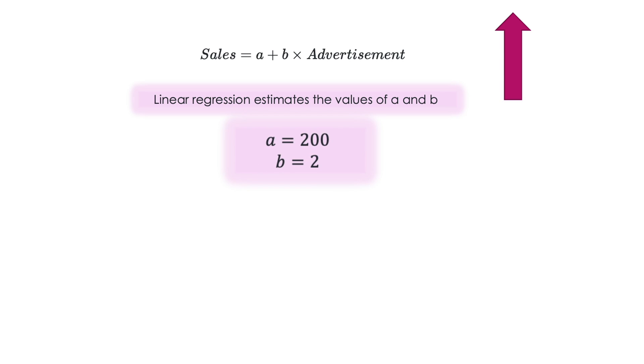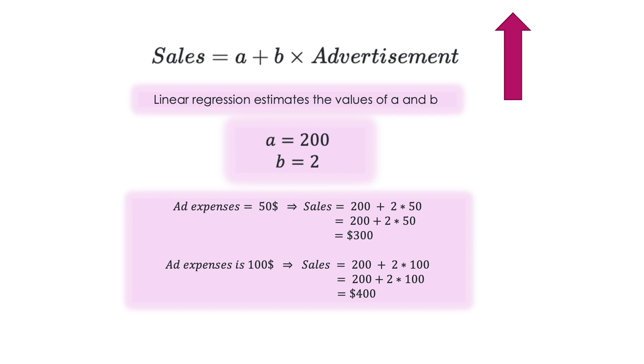How can we predict the sales now? That's again very simple. So we just put these values in the regression equation that is shown on top. So using this method when ad spent is 50 dollars, predicted sales becomes 300. And when ad spent is 100, sales would be 400. So you are saving 50 dollars in advertisement but you are also losing 100 in sales, which means it may not be a very good decision.